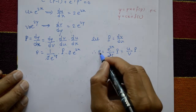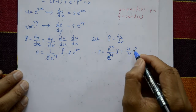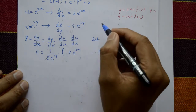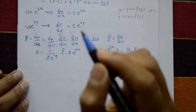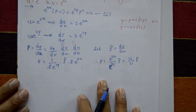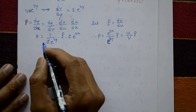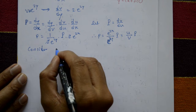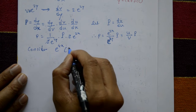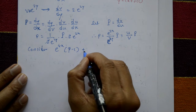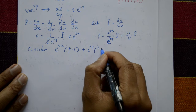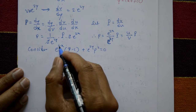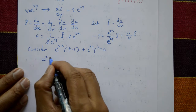So small p equals u by v into capital P. Now substitute this result, along with u equal to e raised to 2x and v equal to e raised to 2y, into the original equation number 1.